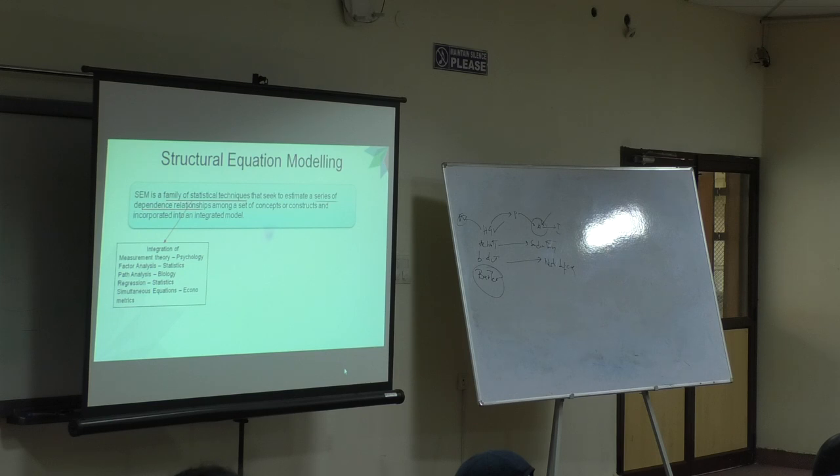The next phrase I'm going to look at is 'a series of dependence relationships.' What does this mean? With our understanding of regression, what does that mean? There are multiple independent variables. That was there in regression also. But here there are multiple dependent variables.